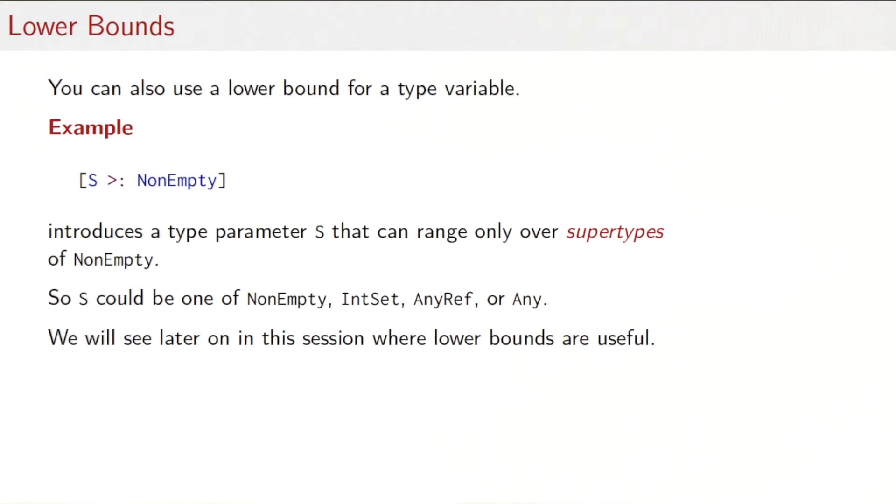So we've seen upper bounds where the type variable ranged over all subtypes of a given type. Scala actually also has lower bounds. So we could say a bound S is a supertype of NonEmpty. And that would introduce a type parameter S that can range only over the supertypes of NonEmpty. So in our case of the IntSet example, S could be one of either NonEmpty, IntSet, AnyRef, or Any. You might ask where are lower bounds useful and it's not immediately apparent, but we'll see later on in this session an important use case where lower bounds are indeed essential.